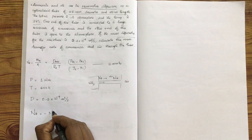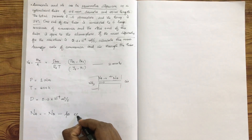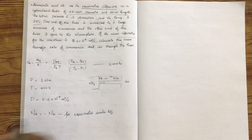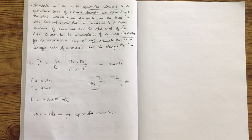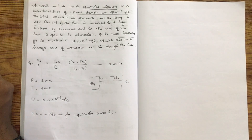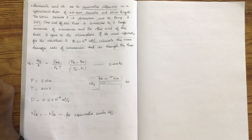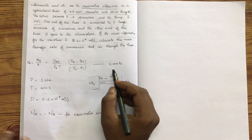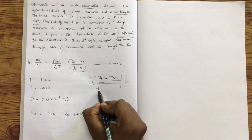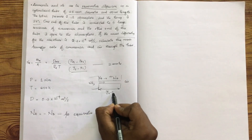NA is equal to minus NB for equimolar counter diffusion. Now we change the mass transfer rate of ammonia — it is equal to minus 1 meter. Now we define the mass diffusivity and y2 minus y1, which is the length over which the equimolar counter diffusion is happening. We write the equation here.